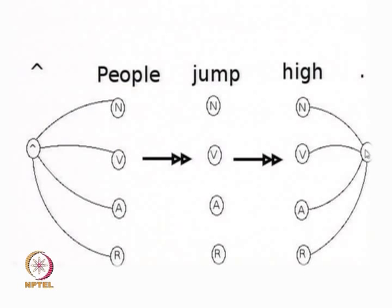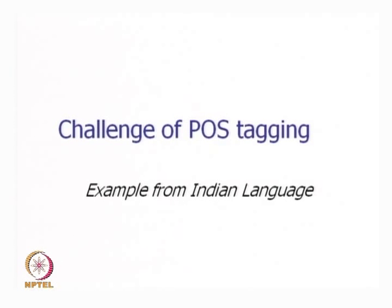The whole POS tagging process has been reduced to a graph traversal task: starting from the hat state to the goal state, we find the best possible path, choosing only one state from the column of states on each word. This makes the formulation quite clear. We are now ready to look at the techniques of POS tagging. Before that, we would like to understand why POS tagging can be challenging.